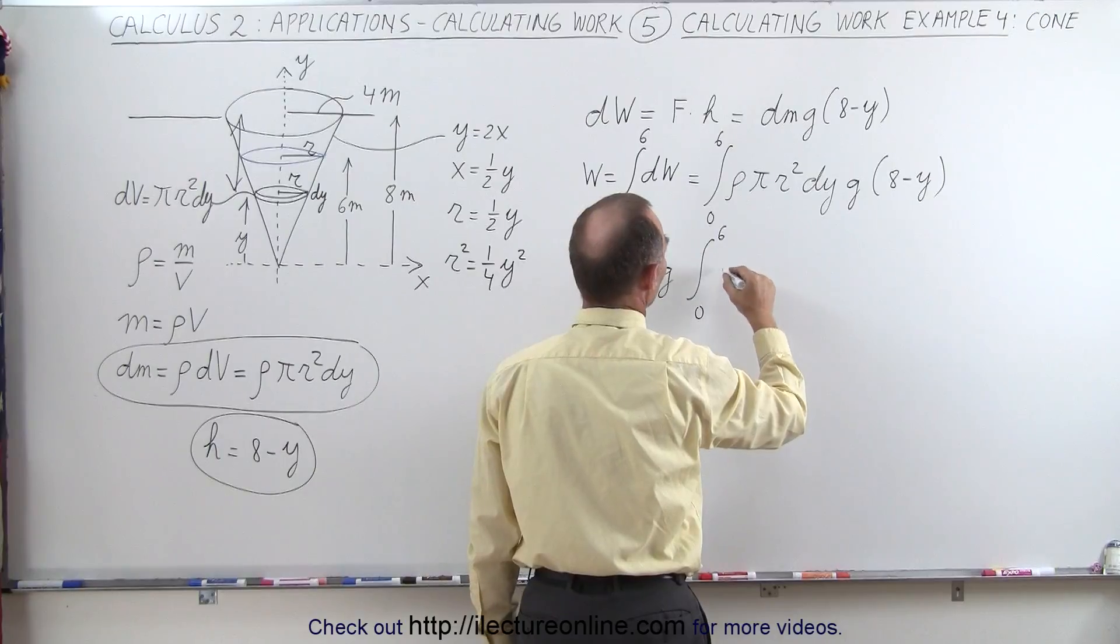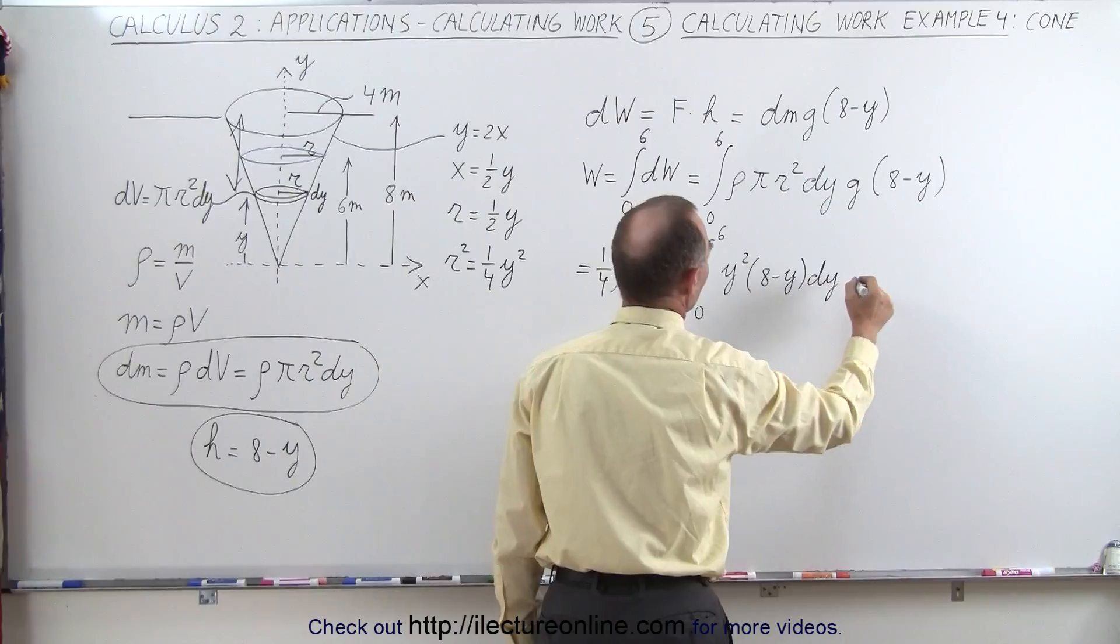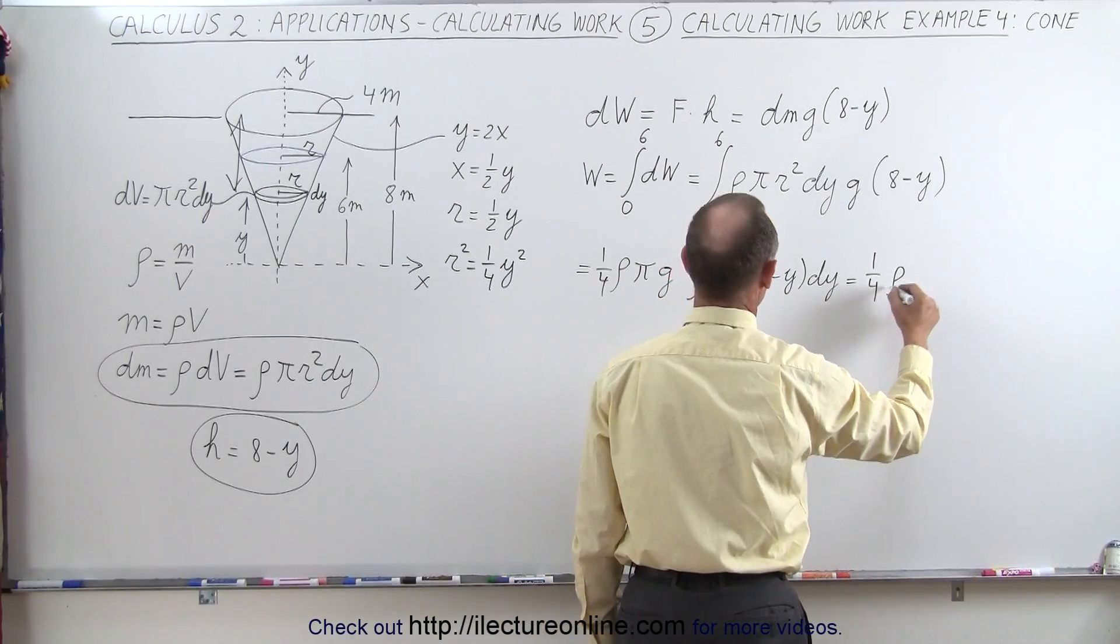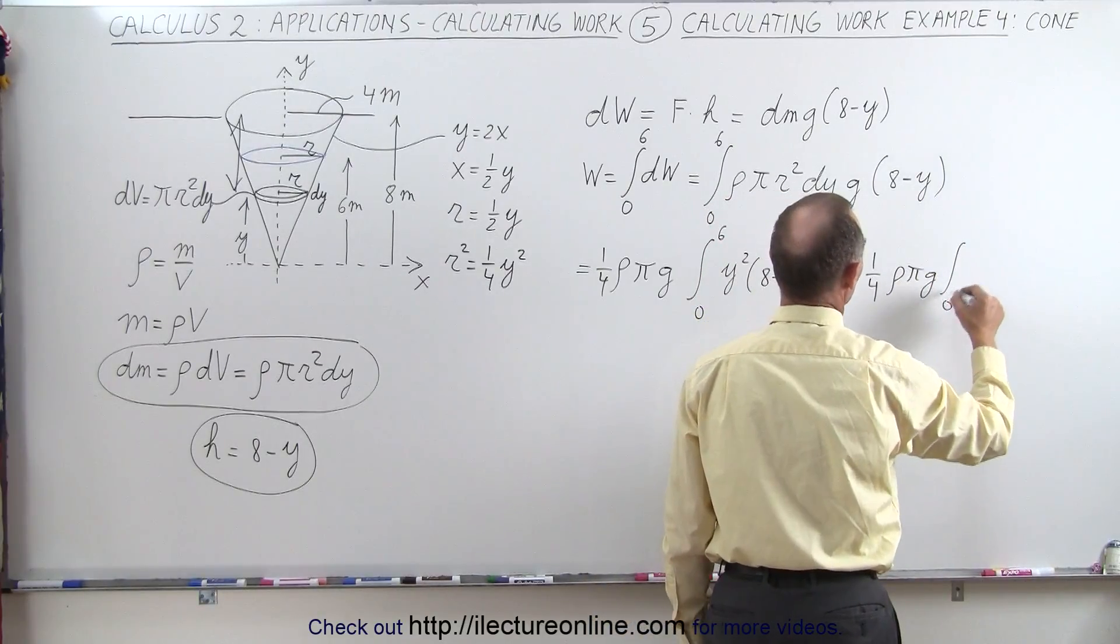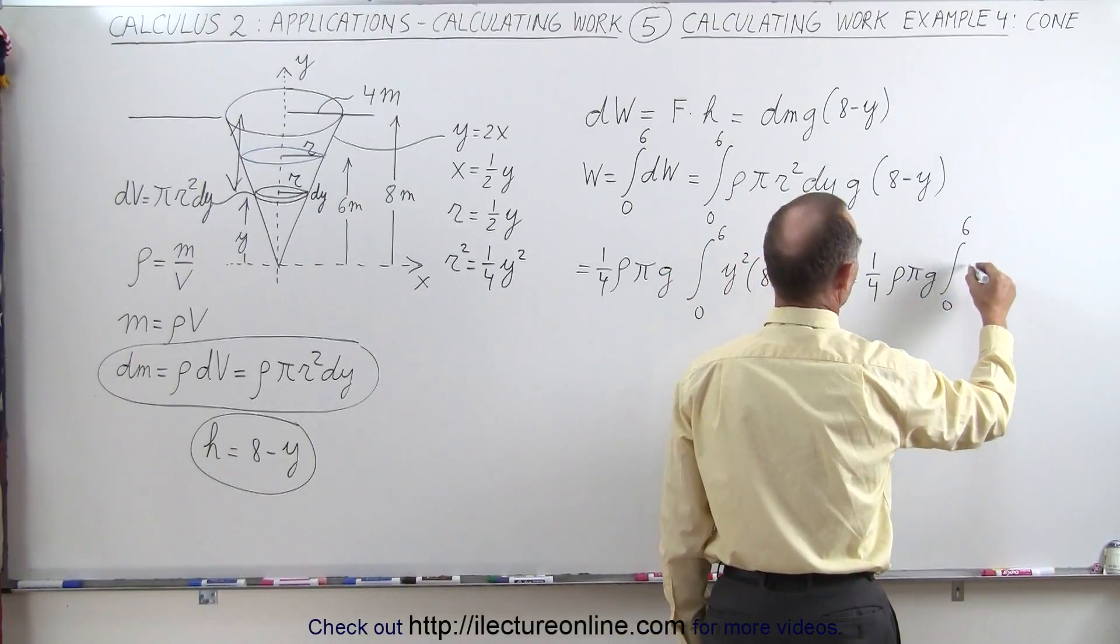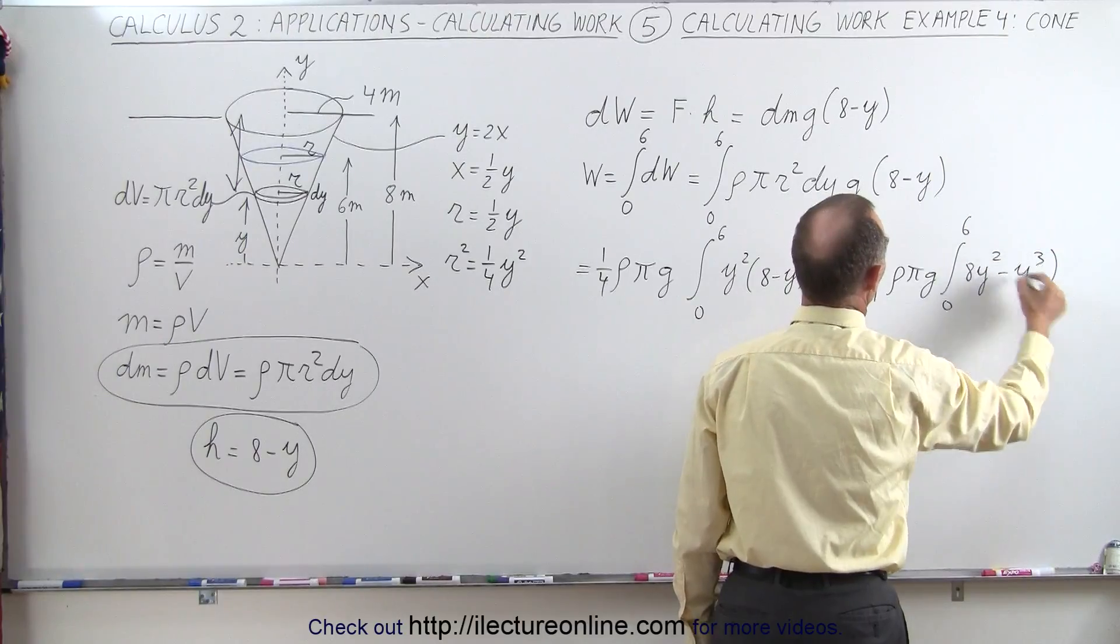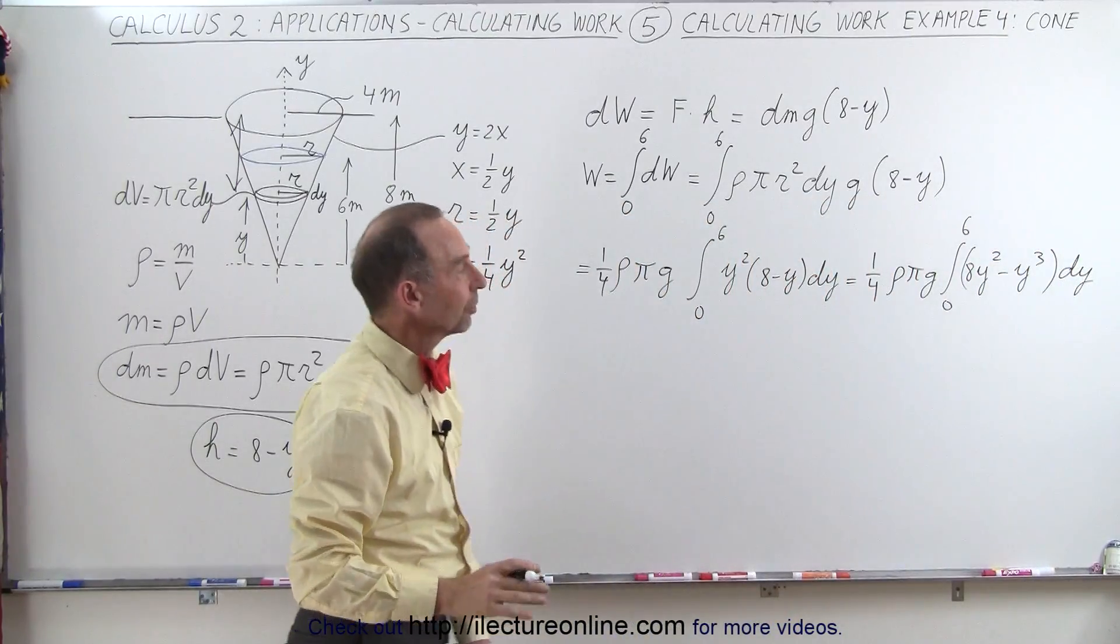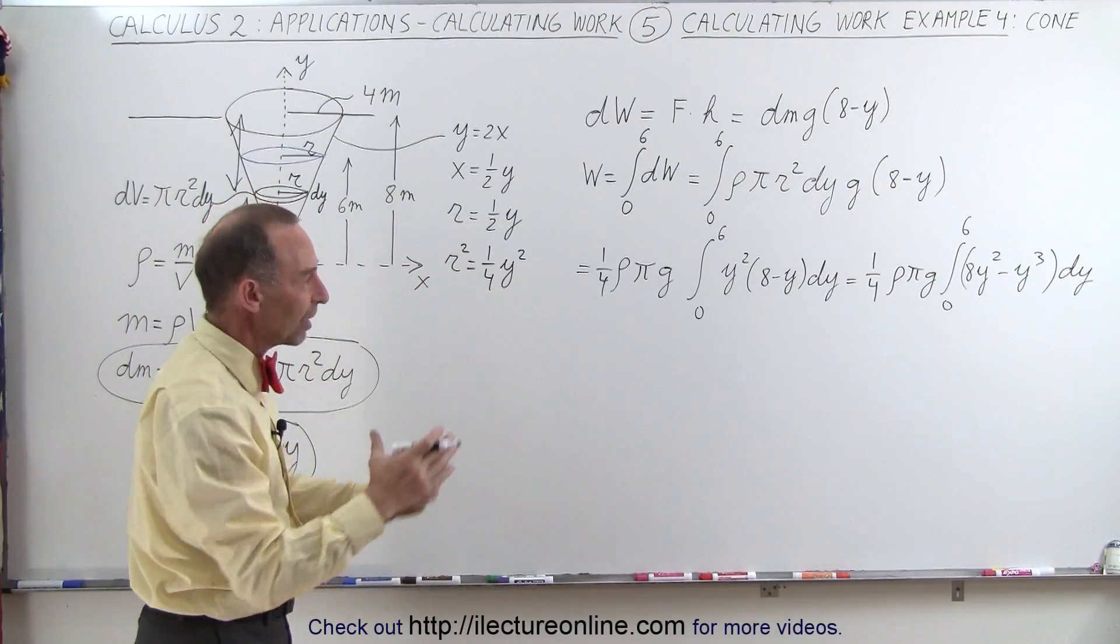Instead of r squared we'll have y squared times 8 minus y dy, which is equal to one quarter rho pi g times the integral from 0 to 6 of, when we multiply this out, we get 8y squared minus y cubed times dy. And so that becomes our integral to calculate the work done to lift all that water out of that cone-shaped basin.